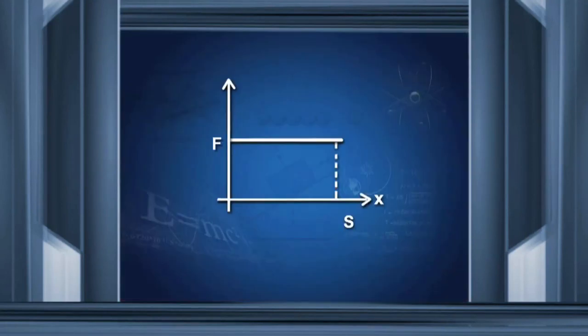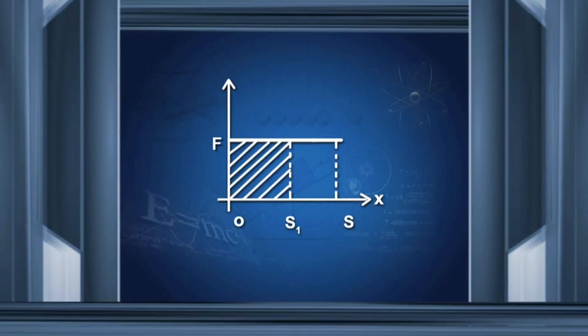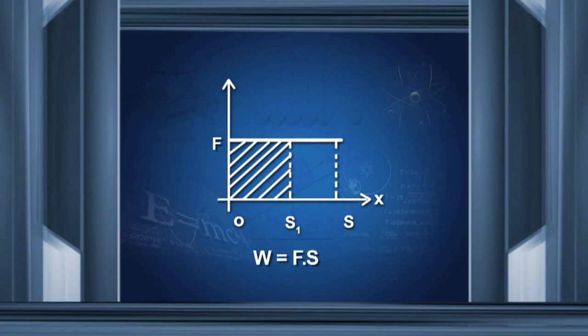From a starting location to a position s1, the graph area in question is this segment. We just need to find F into s and we get the value for work. If the displacement extended further, we would include that additional section to calculate the total work. That is quite easy to understand.